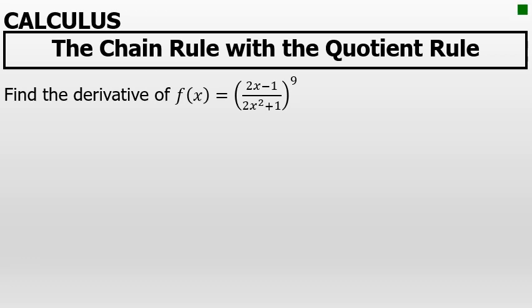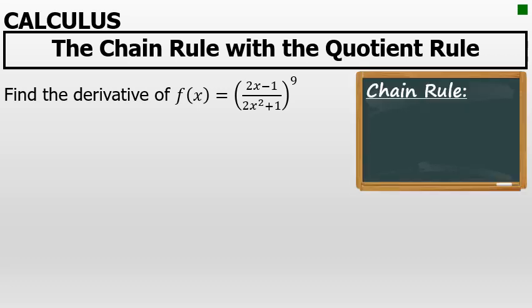The derivative of f of x equals the quantity of 2x minus 1 over 2x squared plus 1, all to the ninth power, is going to require the chain rule. This is a quantity to a power. The general power rule, which is a special case of the chain rule, states that the derivative of any u to the n power...